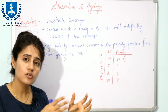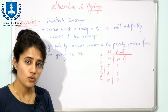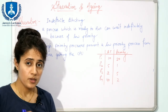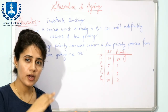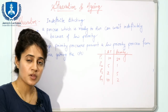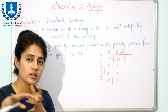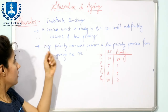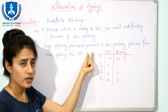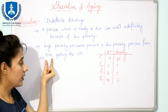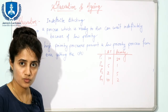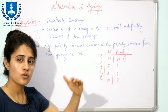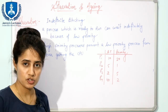Why will a process wait? Because of some high priority processes — in priority scheduling, CPU is allocated to processes which are having high priority. Maybe there are many high priority processes coming into the system, so CPU will be allocated to those rather than a process with low priority. High priority processes prevent a low priority process from ever getting the CPU. This is what the starvation problem is.